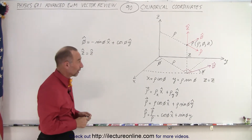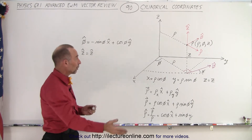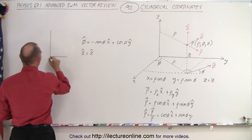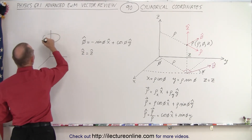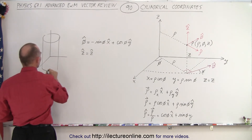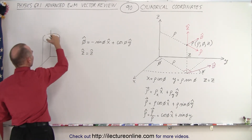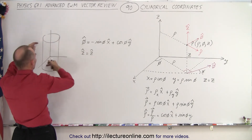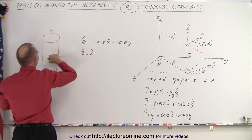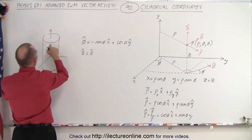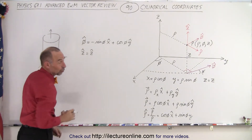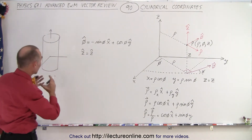In E&M, we'll encounter a lot of cylindrical shapes. When we think of cylindrical shapes, if we draw the XYZ axis like this and we draw a cylinder where the center of the cylinder is located where the Z axis is located — you can see the Z axis goes right to the center of the cylinder — cylindrical coordinates are really good in describing what is happening.